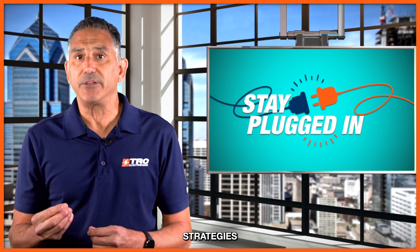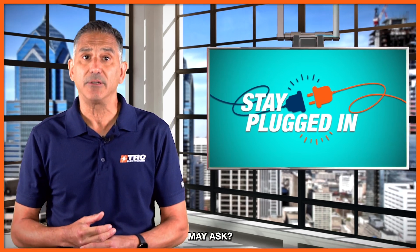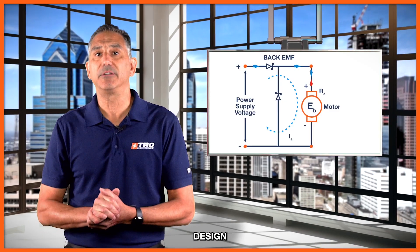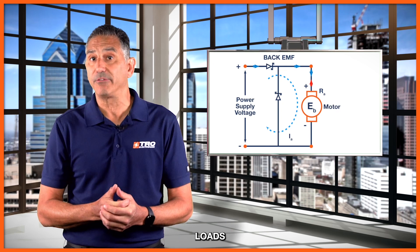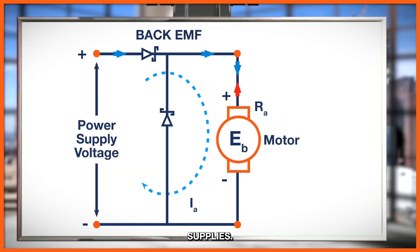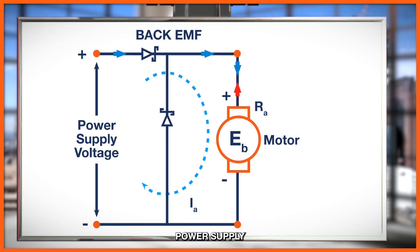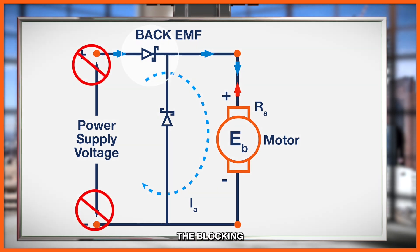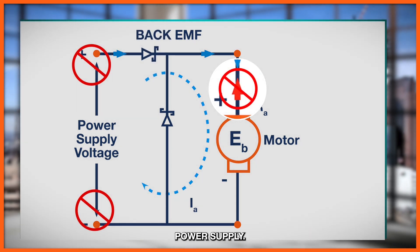What design strategies can we use to protect these power supplies from the effects of back EMF? Let's cover some of the design considerations we have with powering inductive loads with power supplies. The first is to use blocking diodes in series with the load. A blocking diode will conduct when power is applied to the inductive load, but when the power supply output shuts off, the blocking diode will prevent the current from flowing back to the power supply.